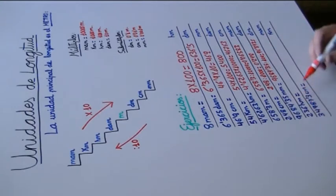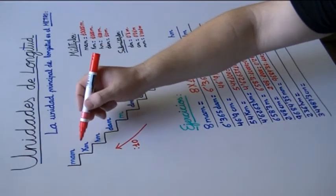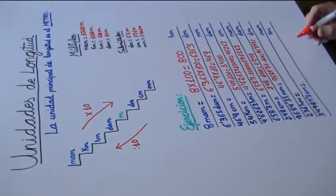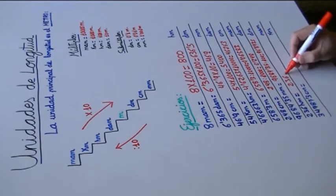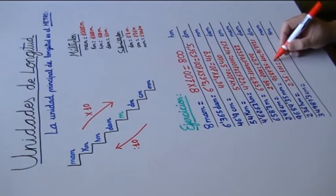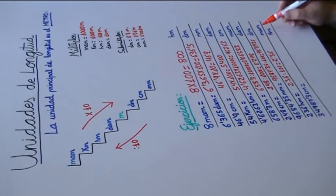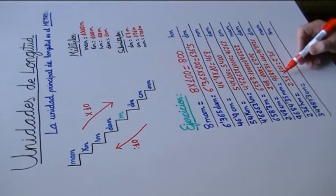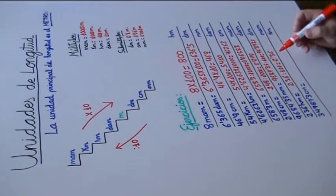236 hectómetros a milímetros. De hectómetro a milímetro, subimos 1 y 2 escalones. Dividimos entre 100, porque son dos escalones. 236 entre 100 es igual a 2,36 milímetros. Desplazamos la coma hacia la izquierda. Dividir siempre es hacia la izquierda.